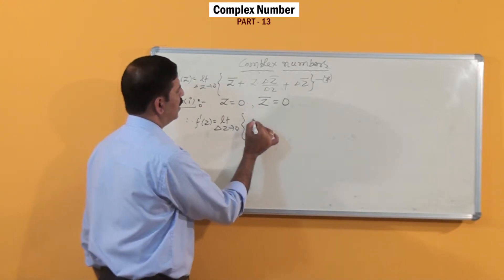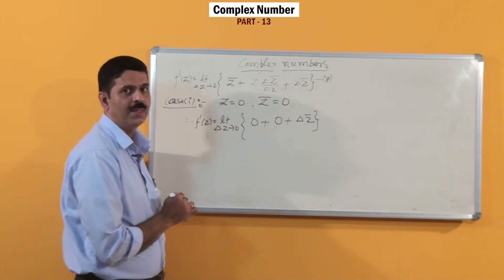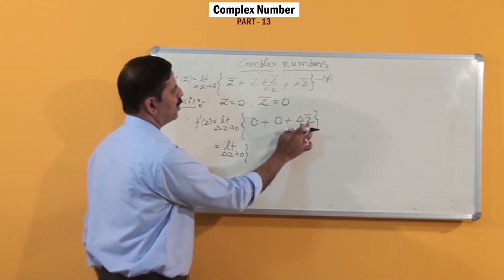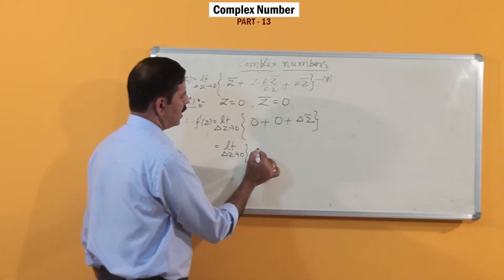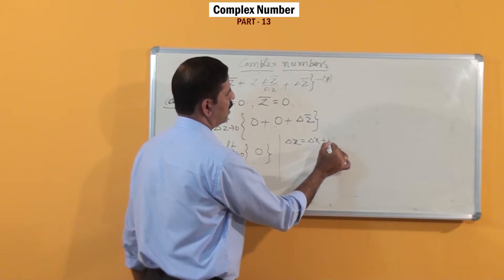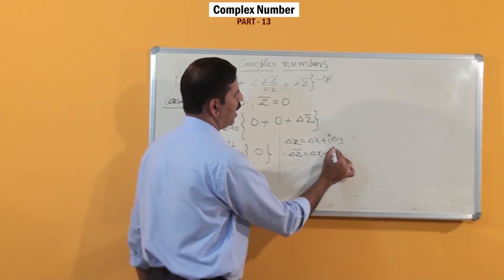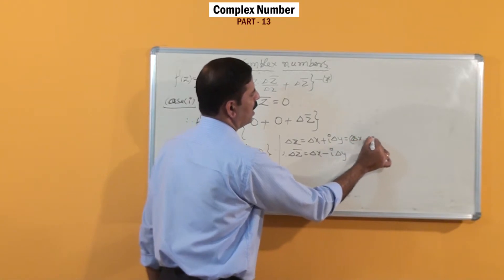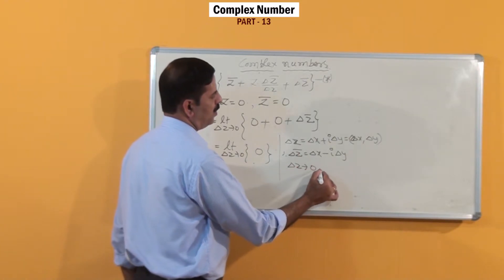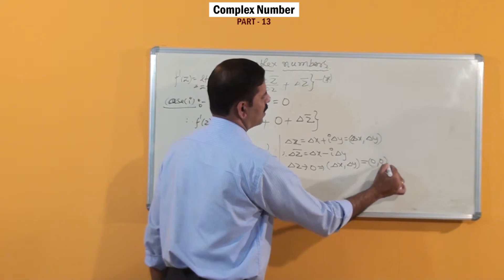This is nothing but 0 + z = 0, and here it remains Δz̄. Therefore this is equal to the limit of Δz̄. Now, you know that Δz = Δx + iΔy, therefore Δz̄ = Δx − iΔy. As Δz tends to 0, this implies Δx and Δy also tend to 0.